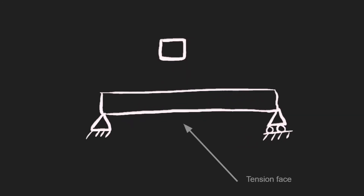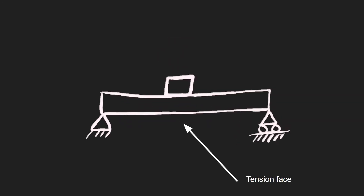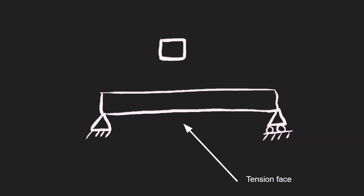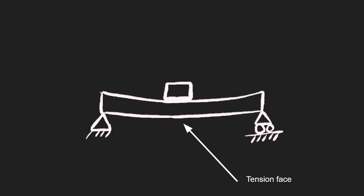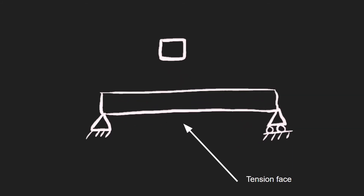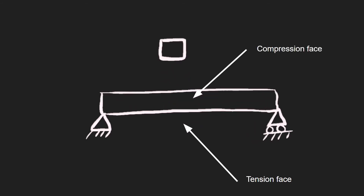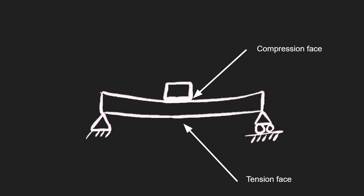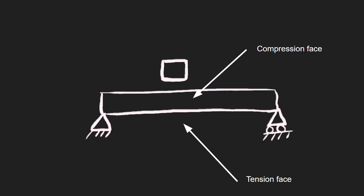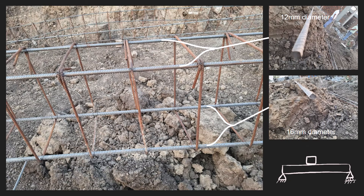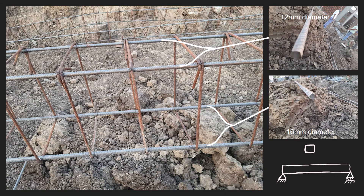Yes, that is indeed correct. As the beam is stretched more towards the bottom, it would be in the tension phase, and hence it becomes obvious that the compression phase would be at the top. Hence, wherever the tension is more, we need more tensile strength. So we increase the diameter of the rods that will come in the tension phase so as to strengthen the beam under tension.